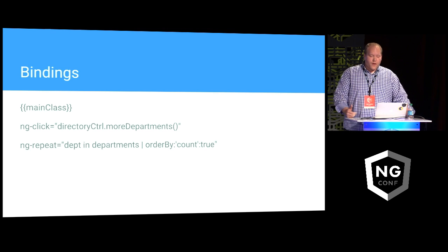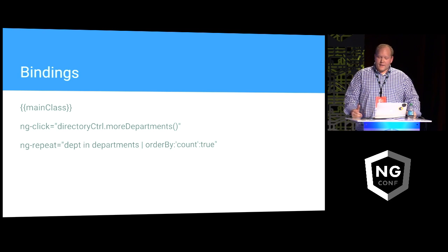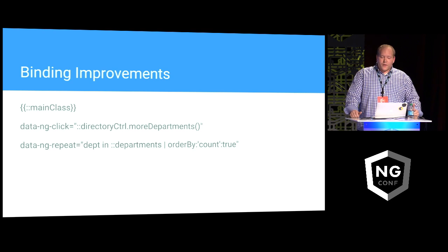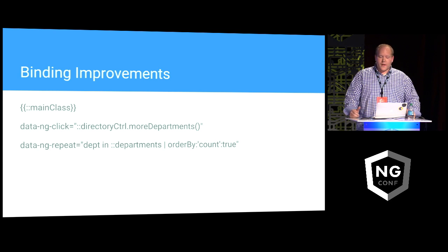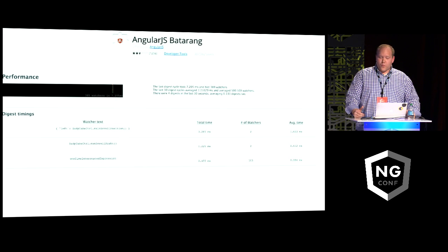Those watchers are made up of a couple different types of bindings: a simple property, a binding for a click event that calls a function, and repeating over an array. All of these on their own are not necessarily bad — sometimes it's as good as it gets. But a lot of times we don't need to watch a binding when we're not expecting it to change. We could do a one-time binding. Good examples are binding CSS classes, functions, or doing a repeat on something that doesn't change like options in a select menu. After making those changes, we're now down to 389 active watchers from 674, and our digest cycle only took 7.2 milliseconds, down from 23 — a good improvement from just a couple of tweaks.